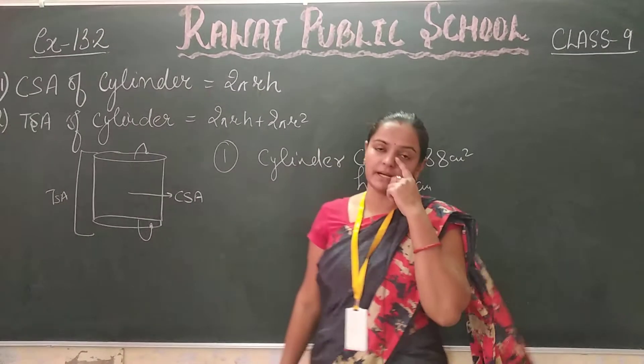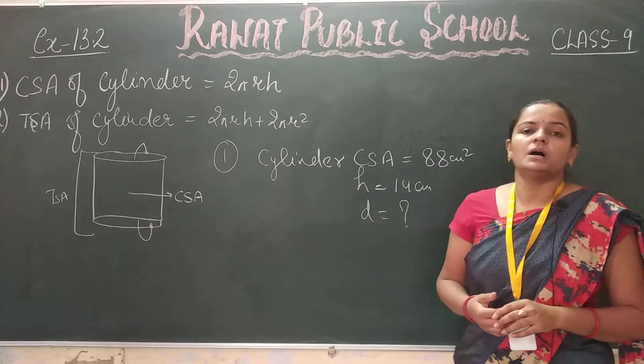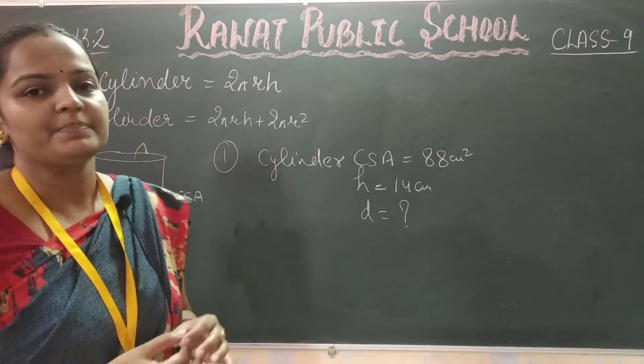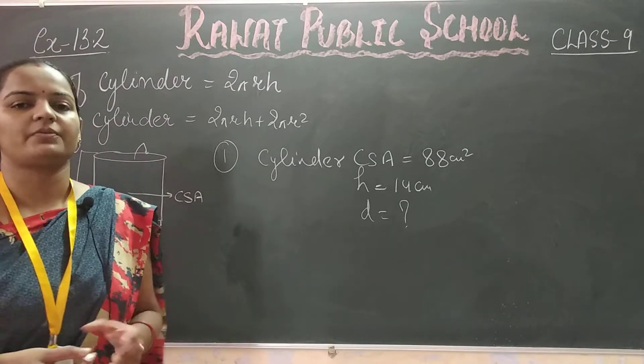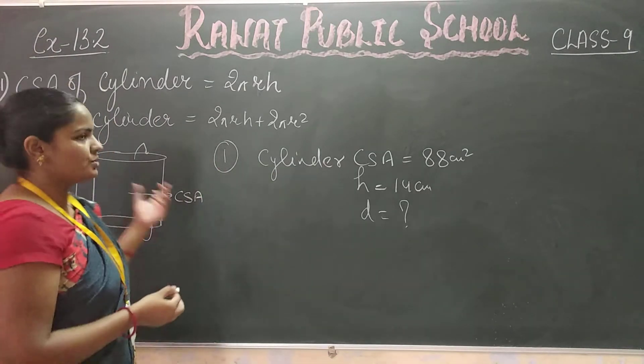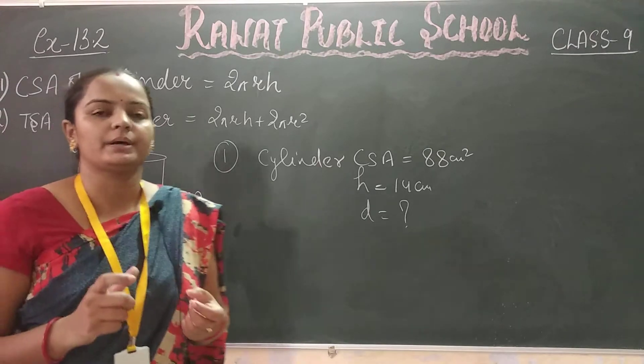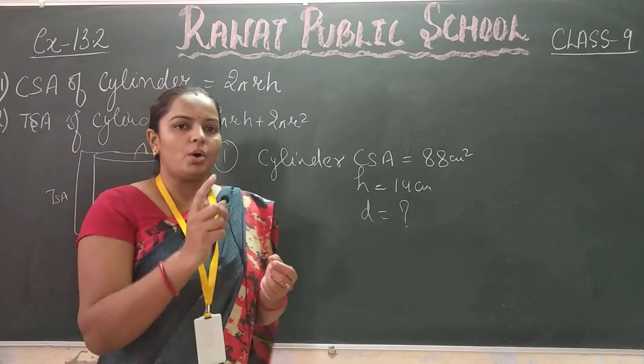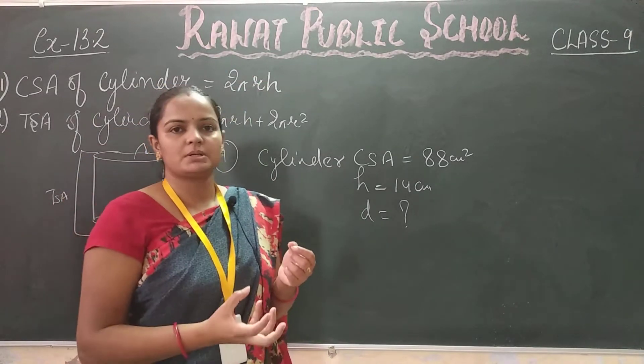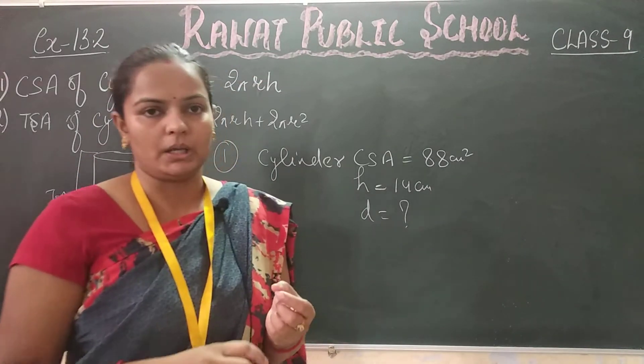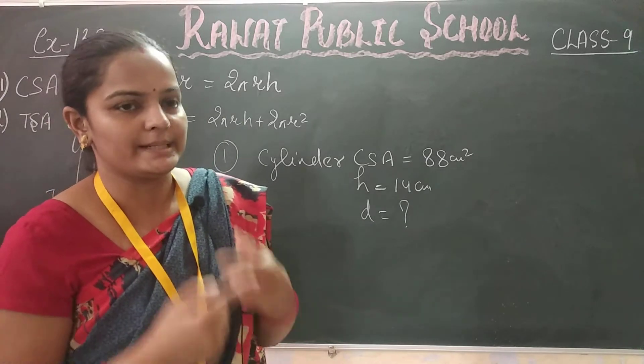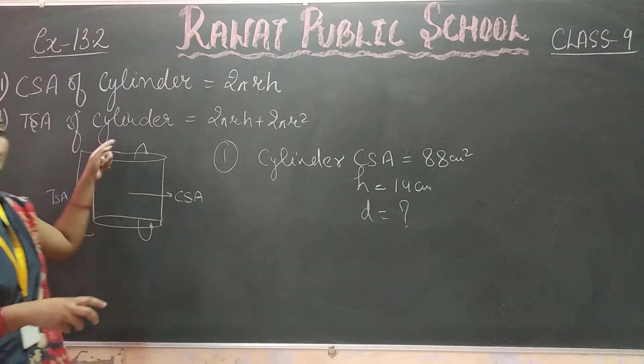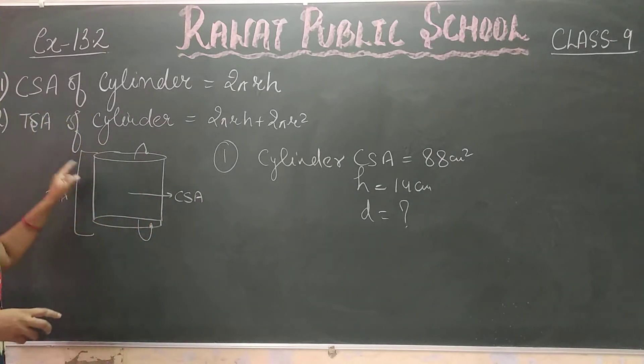Hello everyone, so today we will start Exercise 13.2 which is about cylindrical shapes. How do we find out the cylindrical shape? For example, this is a water bottle. The water bottle has a round shape. CSA is curved surface area. If the top surface is curved and the bottom surface area, the curved surface area is from the cylindrical shape.